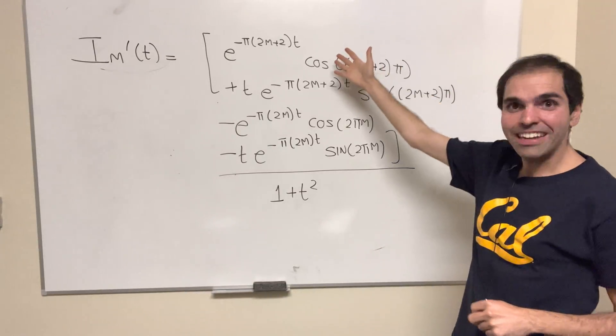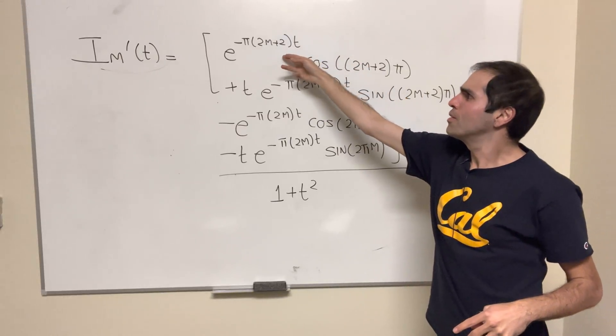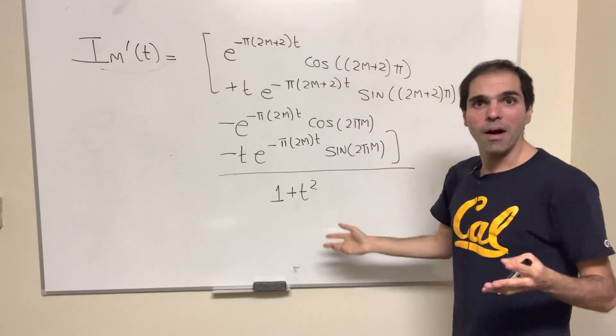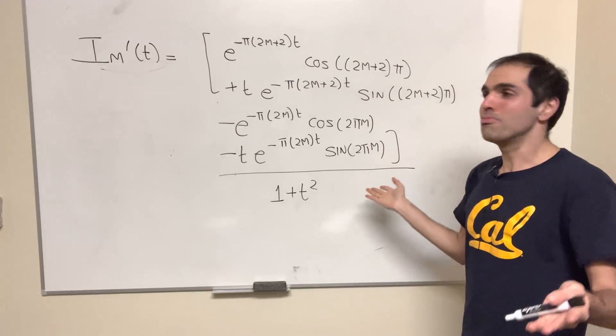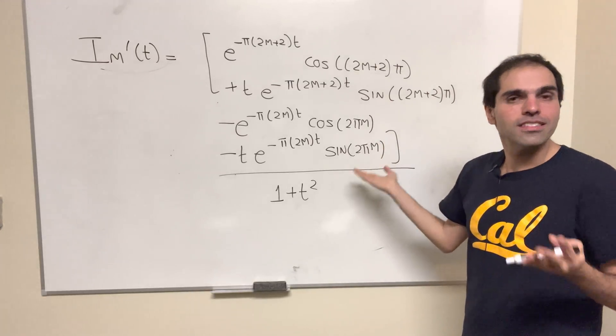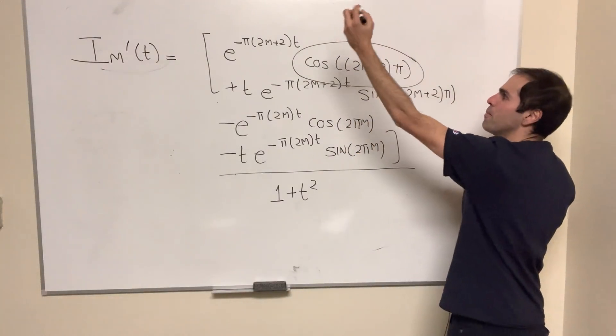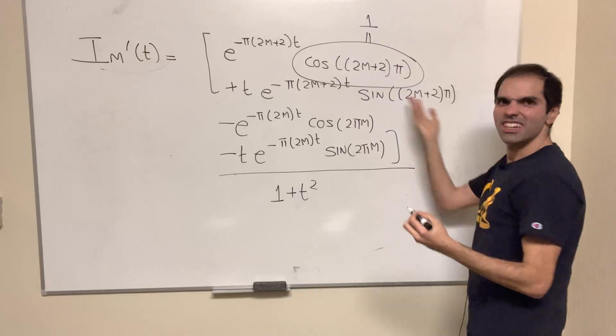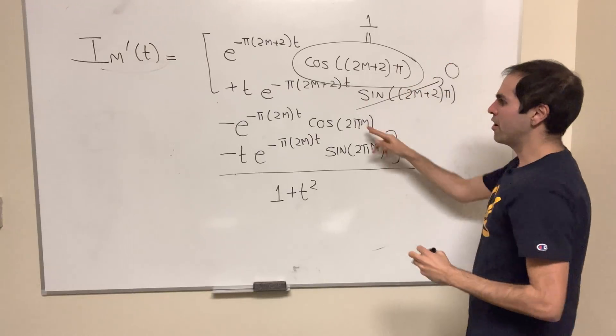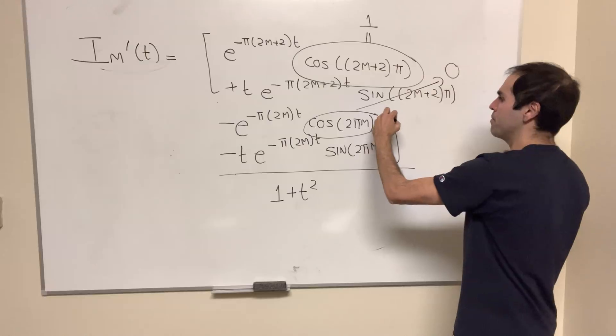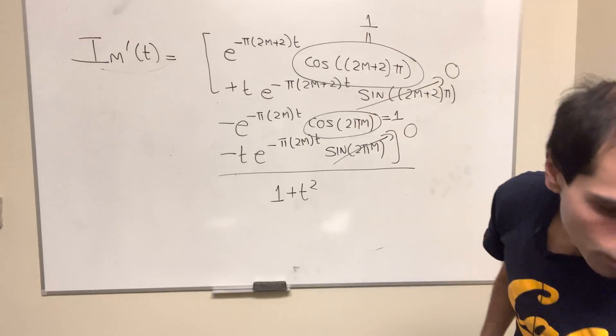So again, if you find the antiderivative and evaluate it from 2π(m+1) and then 2πm, then you get the following thing, which I know it's super scary, but it's not that scary because a lot of terms simplify. So cos(2π(m+1)), that is one, even multiples of π, sin(πm), that is zero. Again, cos(2πm), that is one, and finally sin(2πm), that is zero.